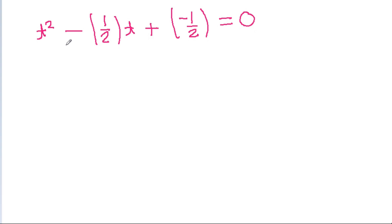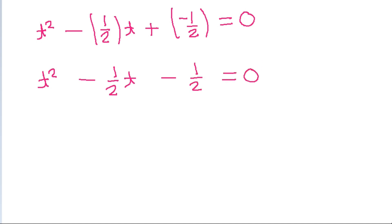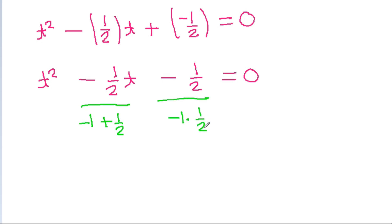It is t squared minus 1 by 2 t minus 1 by 2 is equal to 0. If we add minus 1 and 1 by 2, we get minus 1 by 2. And if we multiply minus 1 and 1 by 2, we get minus 1 by 2.